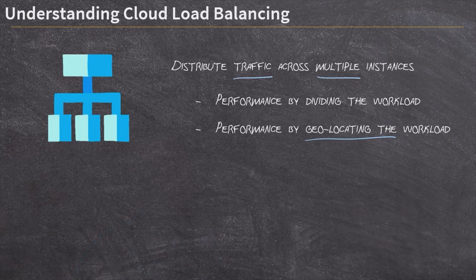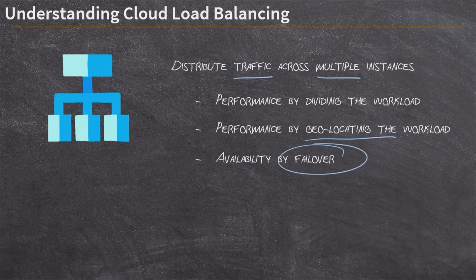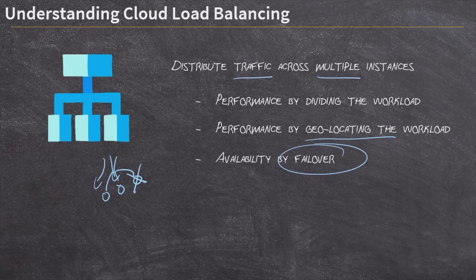Load balancing also provides high availability through easy failover systems. In a load balancing scenario, if your traffic is being distributed to multiple instances of your application and one of those instances goes down, your users aren't going to notice. All remaining traffic gets redirected to the instances that are still up and running, so you don't have any interruption in service — even if a data center went down or a computer crashed.